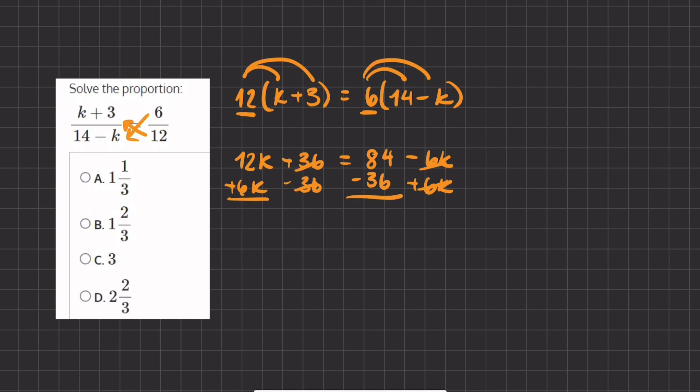12k plus 6k gives us 18k, and 84 minus 36 will give us 48.